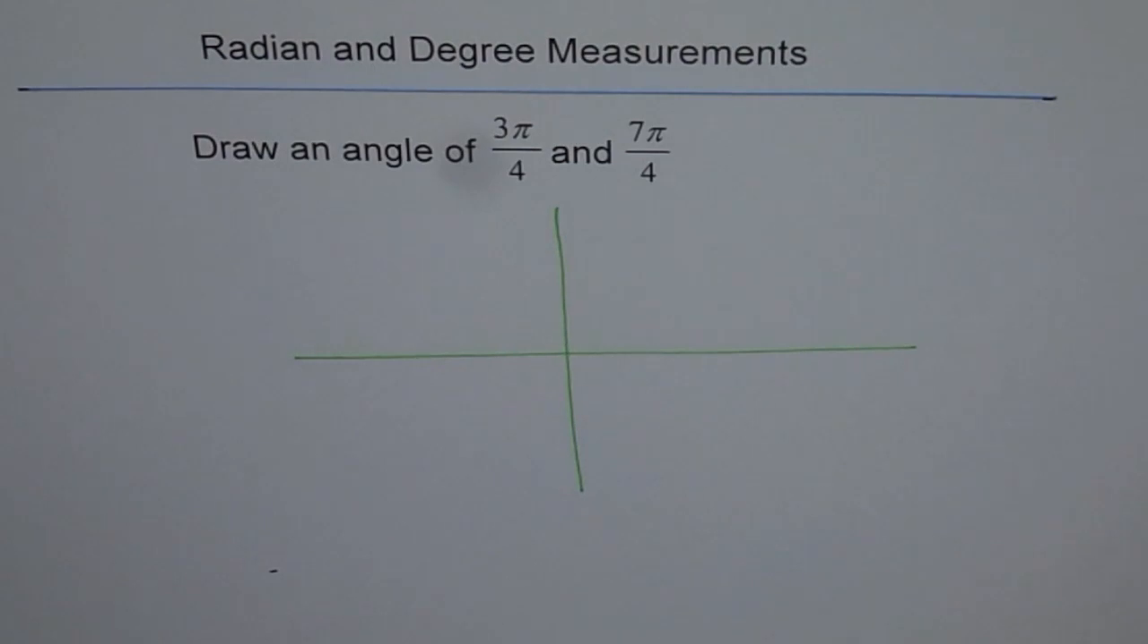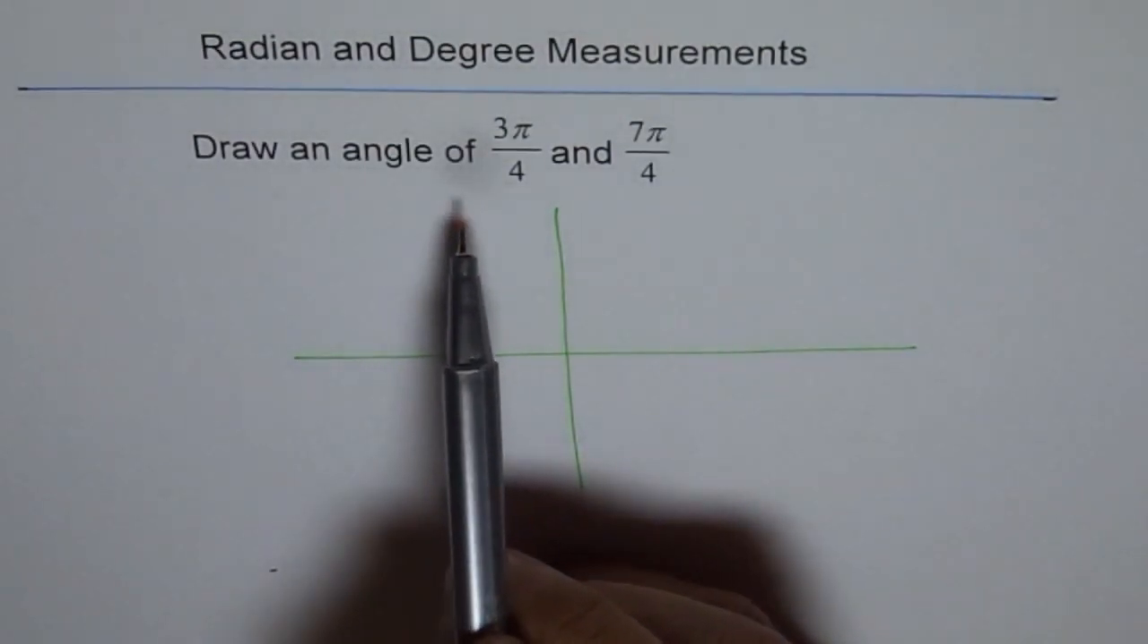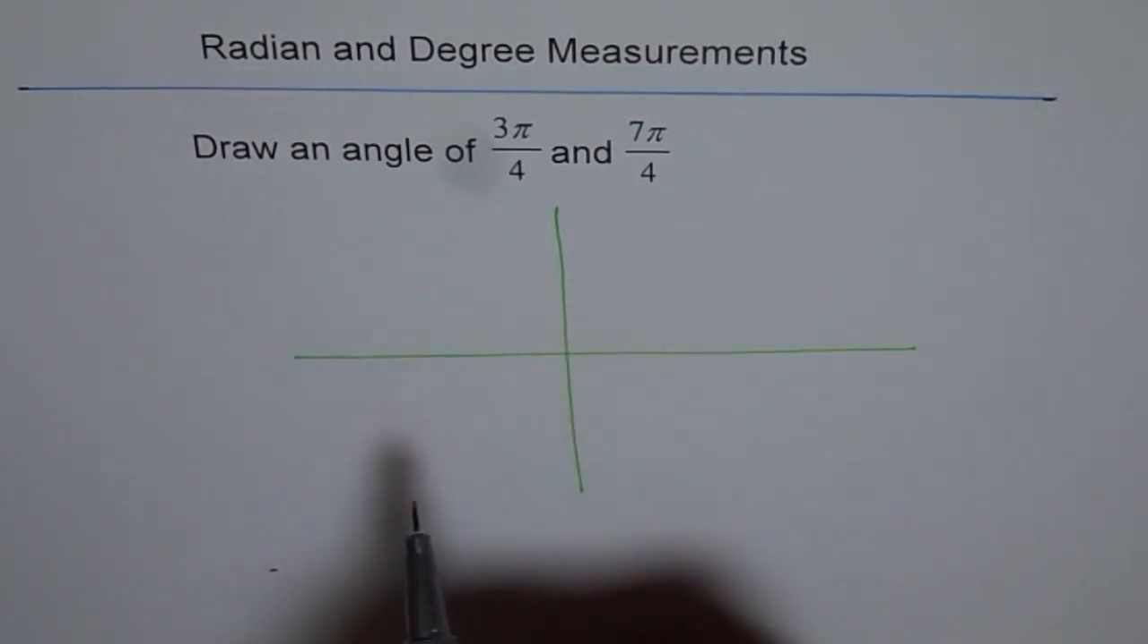Now how to draw angles in radians. If you note, I have taken an example specifically with π/4 so that in one shot I can do both.